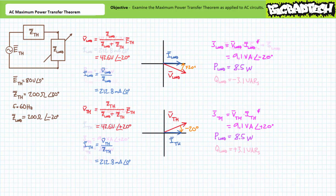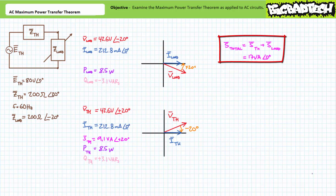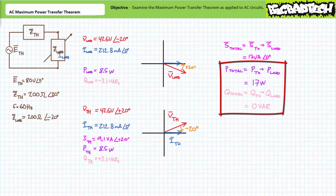Let's now examine power for the complete circuit. Apparent power in equals apparent power out. Accounting for angles, apparent power delivered to Z_TH is pointed at an angle of positive 20 degrees, and apparent power delivered to the variable load is pointed at an angle of negative 20 degrees — the equal and opposite angles serve to moderate each other's influence. Substituting our given values yields a total apparent power figure of 17 volt-amperes at an angle of zero degrees. Total real power equals the summation of individual real powers, giving 17 watts; and total reactive power equals the summation of individual reactive powers, giving zero VARs.